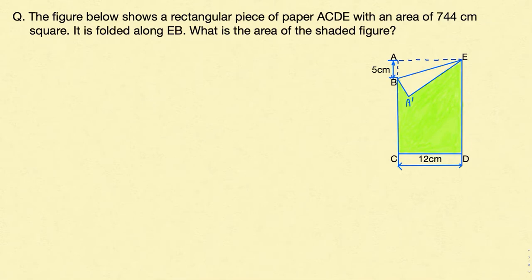Hi guys, welcome to my YouTube channel AdJuventure SG. Let's do another interesting problem on finding the area of a triangle. Let's start by reading the question first: the figure below shows a rectangular piece of paper ACDE with an area of 744 cm². It is folded along EB. What is the area of the shaded figure?